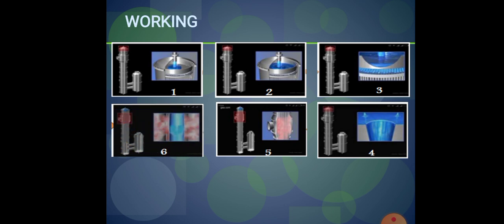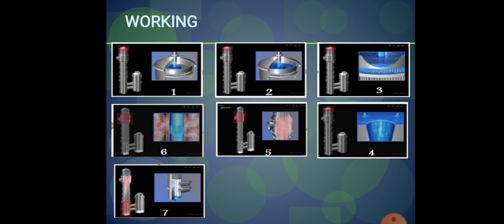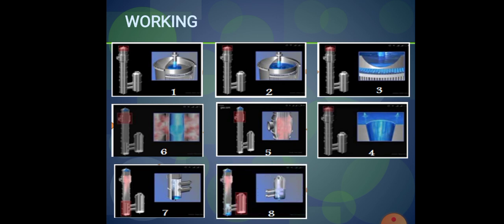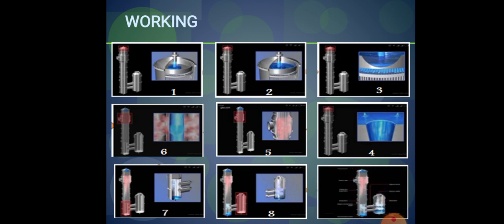In this falling film evaporator, heat is transferred from steam to the liquid through conduction through the walls of the tubes and through convection. When this heat is absorbed by the liquid in the tubes, the liquid starts to boil and vapors are formed. The vapors and concentrated liquid run downward, the liquid concentrates during the journey from top to bottom, and at the bottom the cyclone separator separates the vapors from the concentrated product.